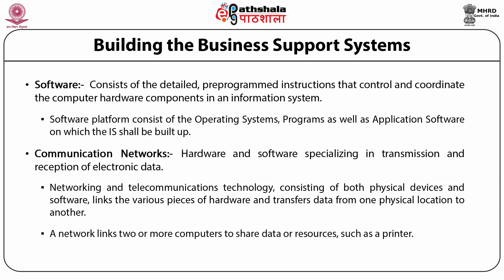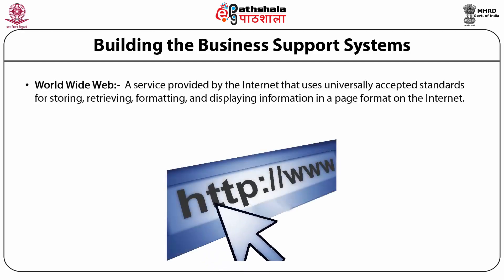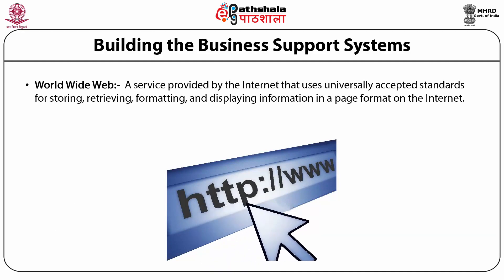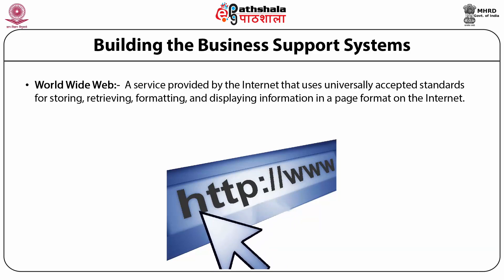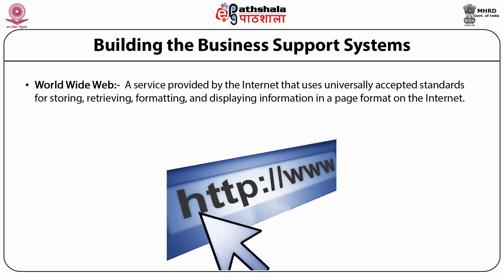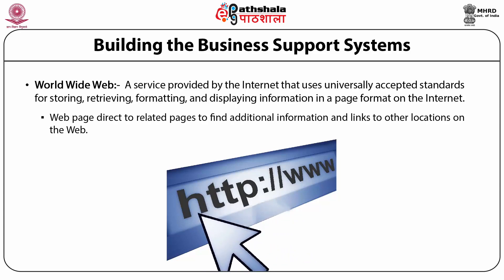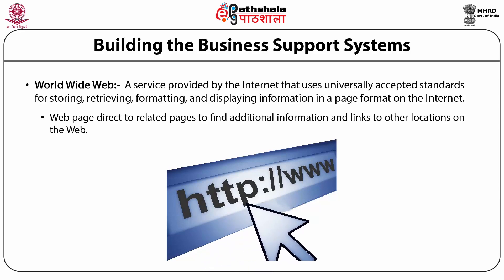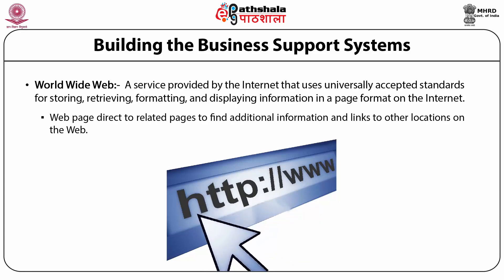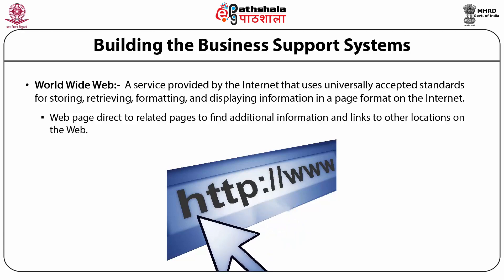A network links two or more computers to share data or resources such as a printer. The World Wide Web is a service provided by the internet that uses universally accepted standards for storing, retrieving, formatting and displaying information in a page format. Web pages consist of text, graphics, animation, sound and video, and are linked to other web pages directing users to related information and other locations on the web.